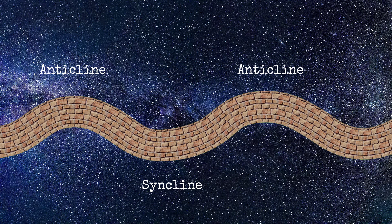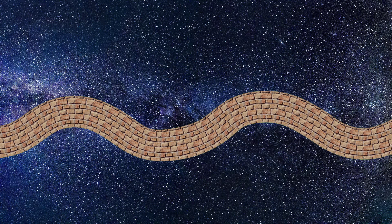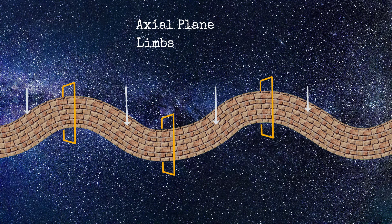To avoid confusion, always remember that the A in anticline kind of looks like the structure. Anticlines and synclines have three basic architectural parts. The axial plane is an imaginary surface that runs perpendicularly through the arch or the trough. Adjacent to the axial plane are the limbs. Notice that connecting anticlines and synclines share a limb.